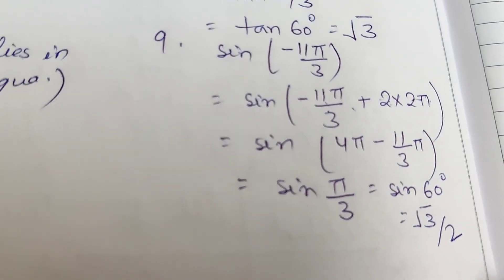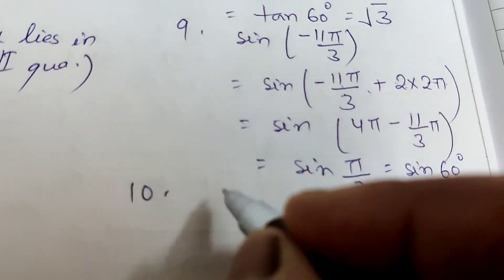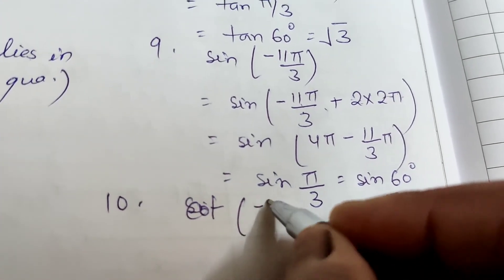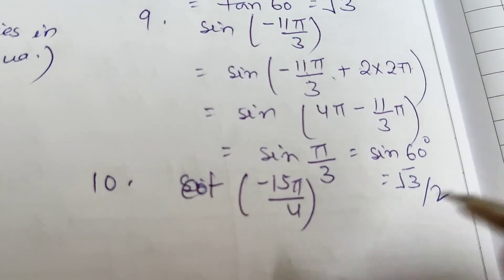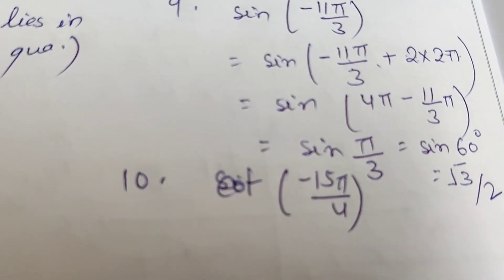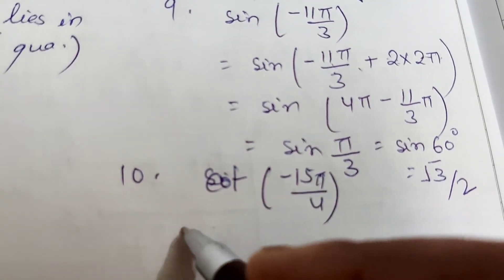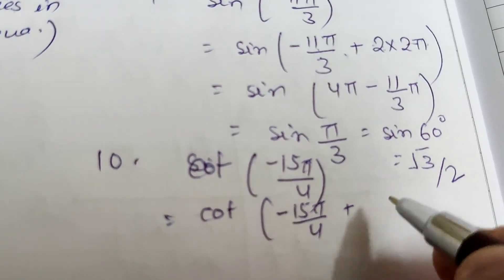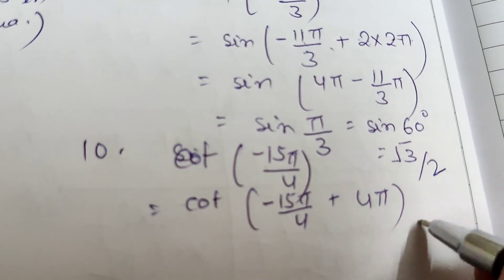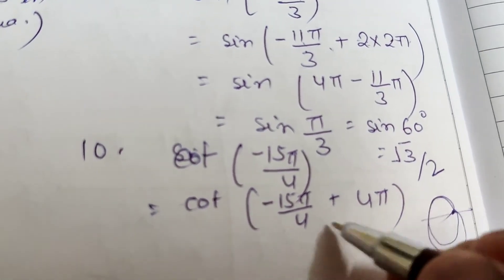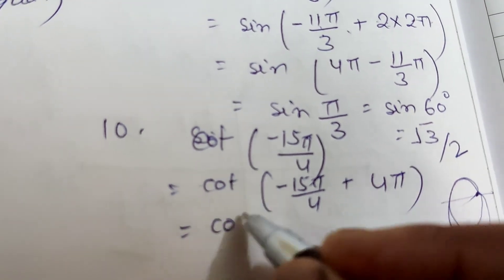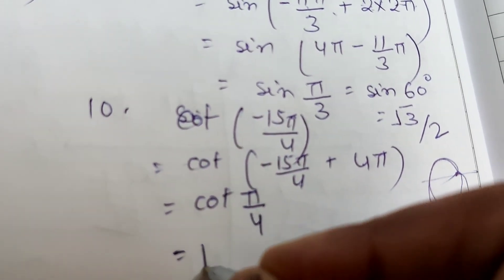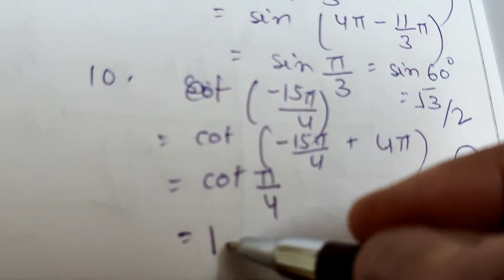Question 10: cot(-15π/4). We write -15π/4 + 4π = (-15π + 16π)/4 = π/4. So cot(-15π/4) = cot(π/4) = 1. The exercise is now finished.